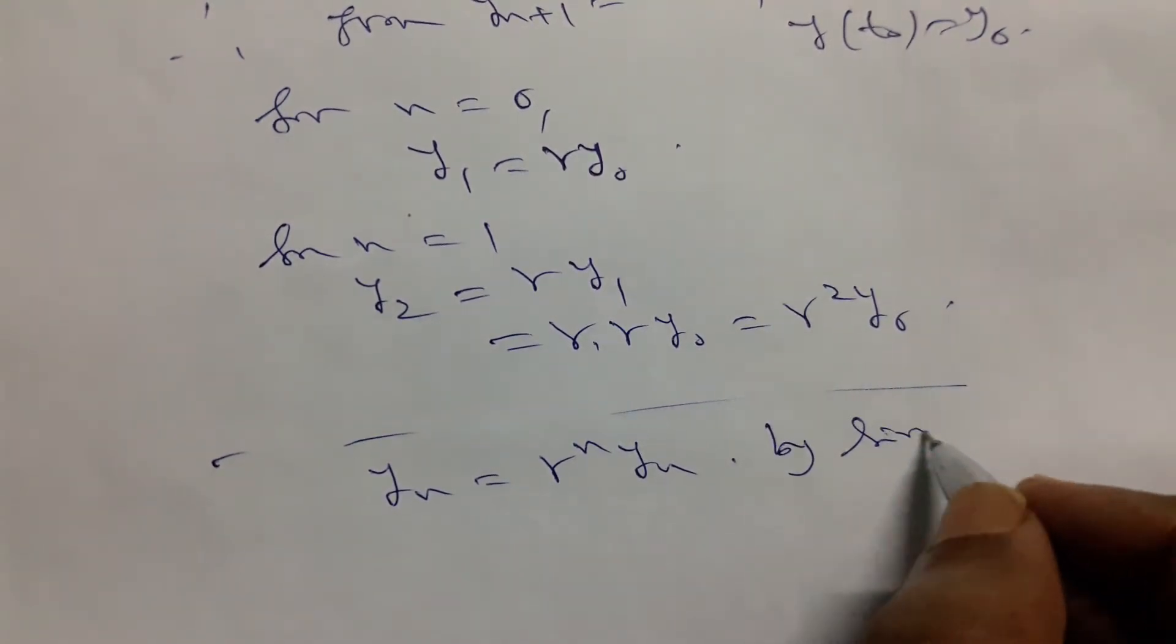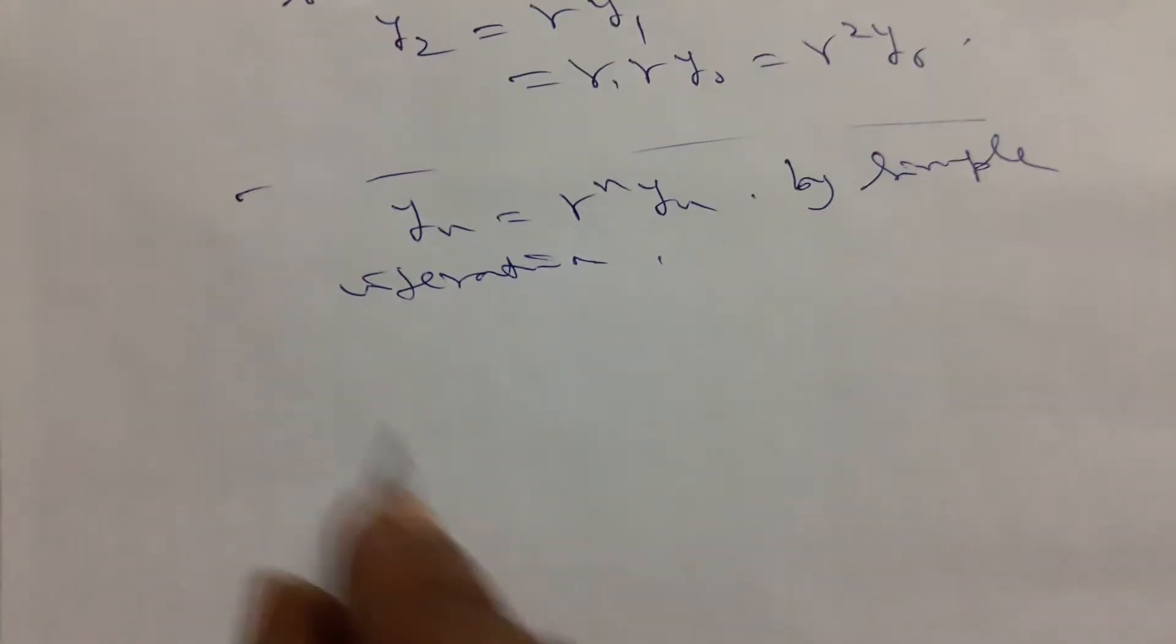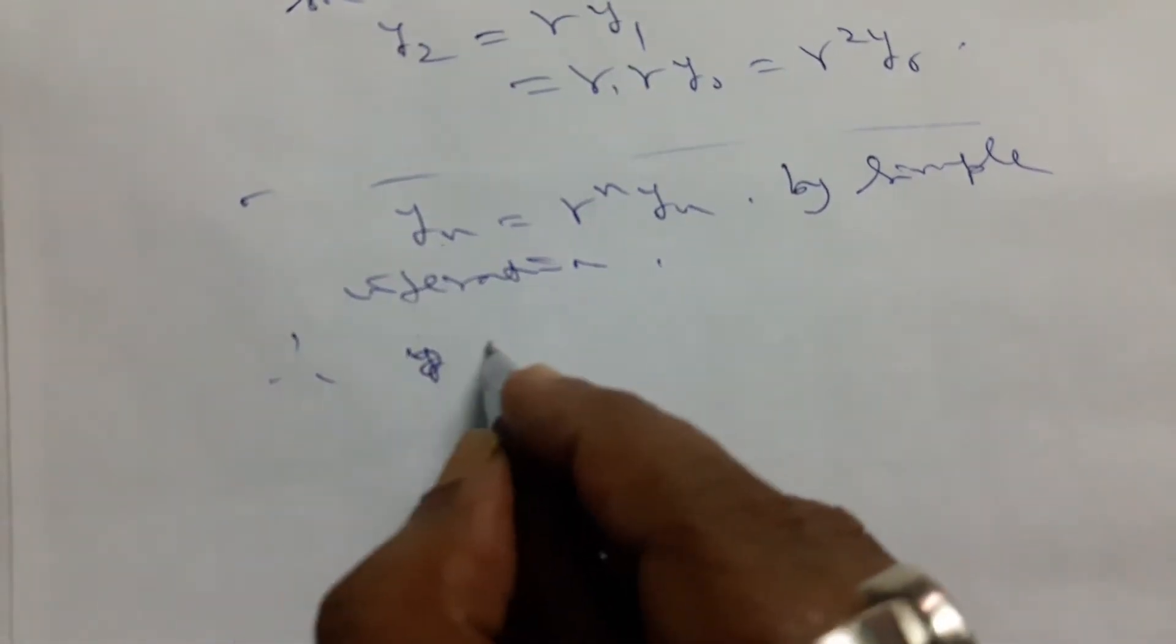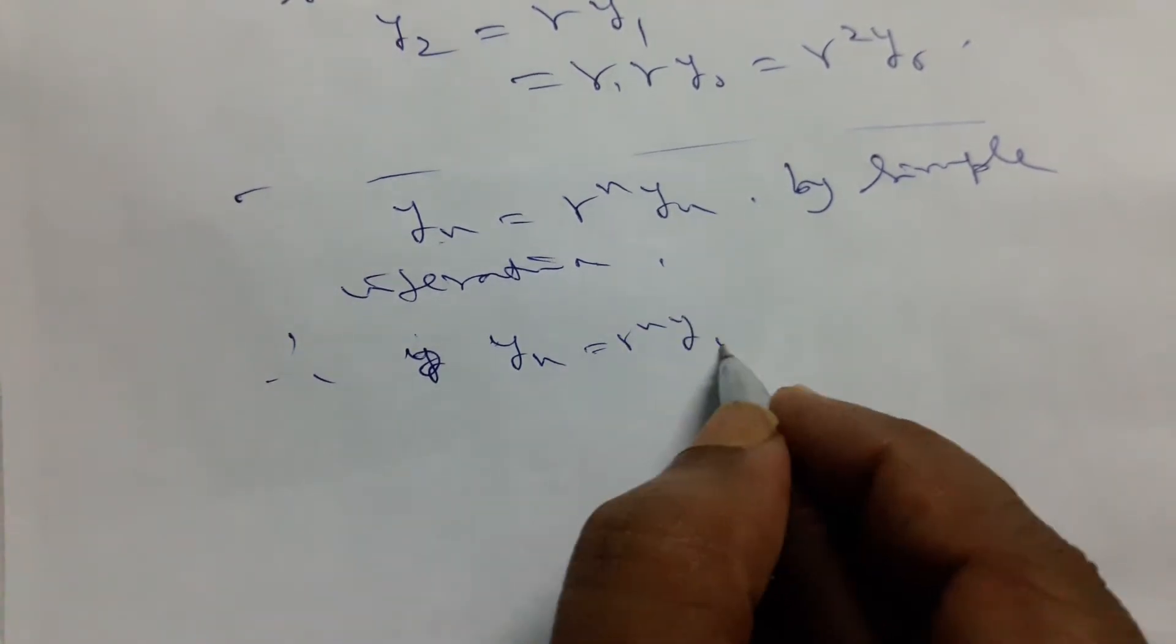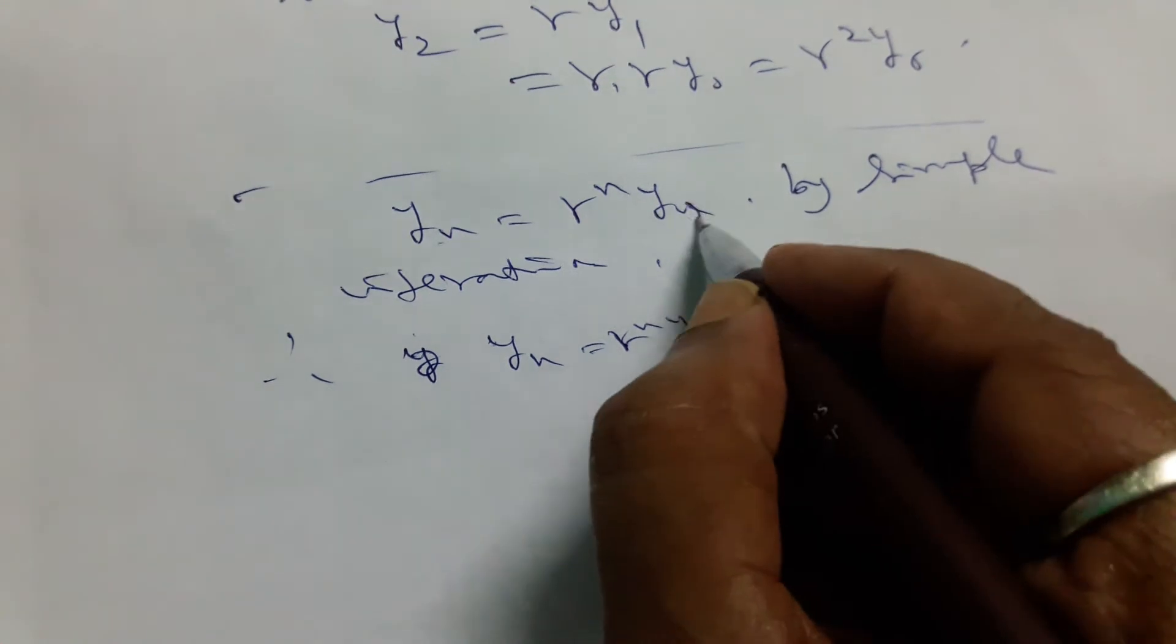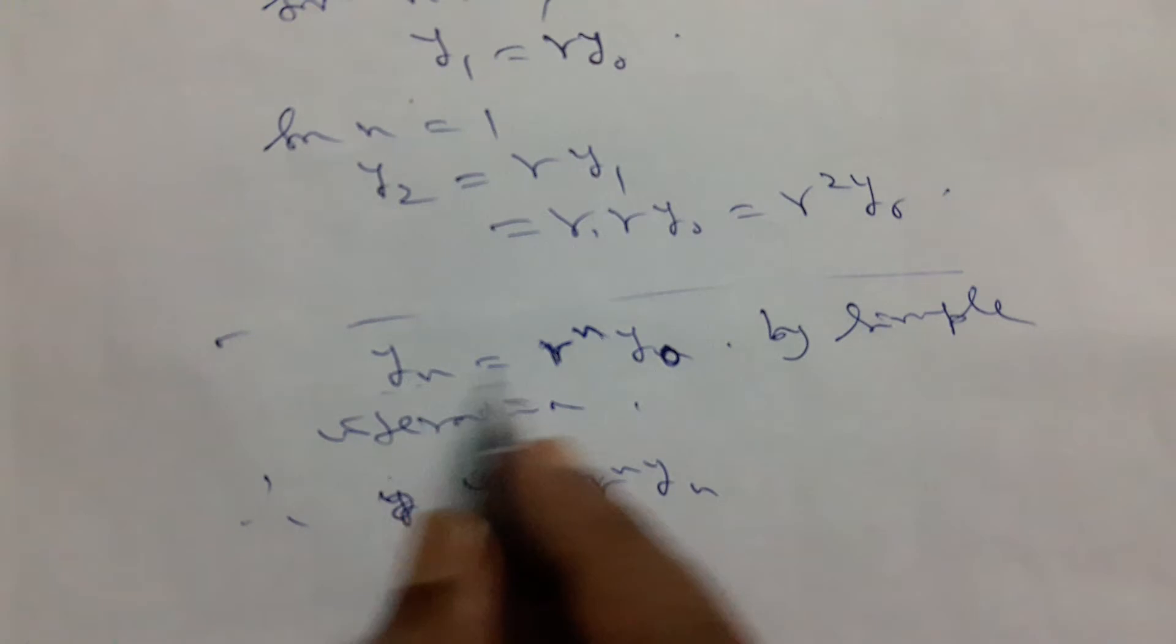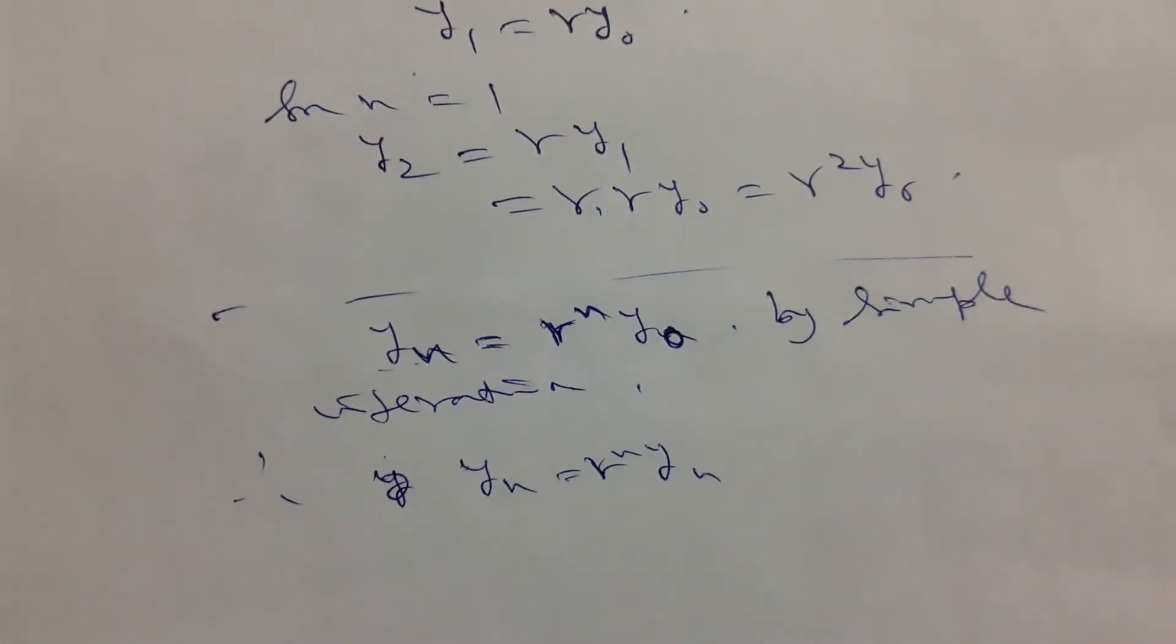By simple iteration, finally we find the solution y_n equals r^n*y_0, by simple iteration process.